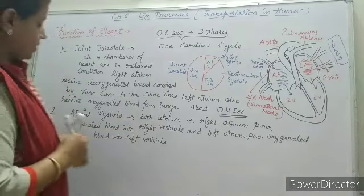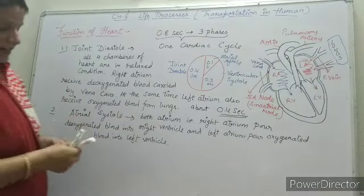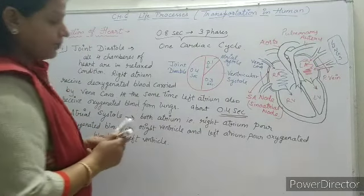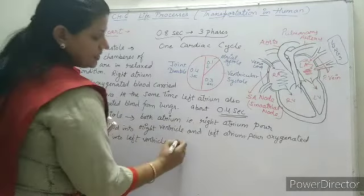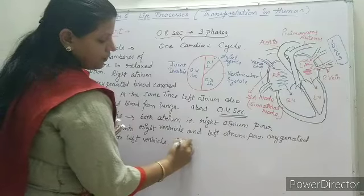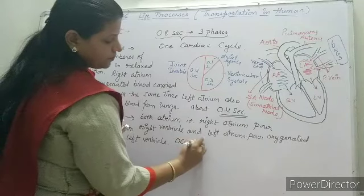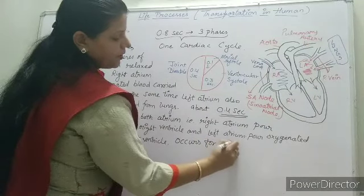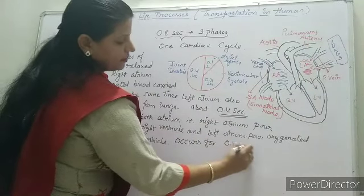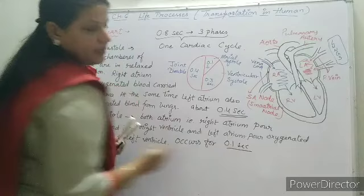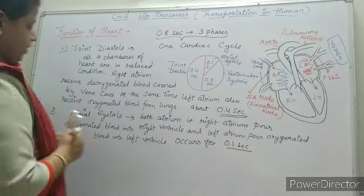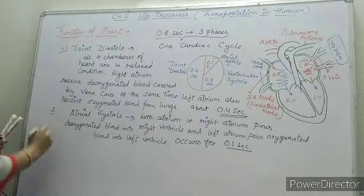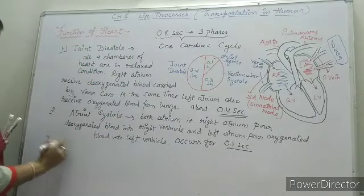This is the second phase — we call it atrial systole. Atrial systole occurs for only 0.1 second. It is the shortest phase.